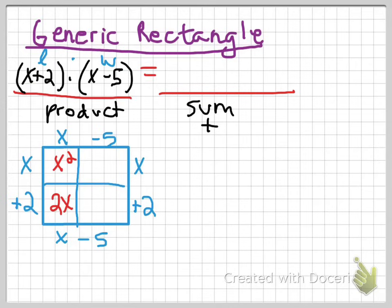In this corner I have negative 5 times x. Well, that's really negative 5x. In this corner I have negative 5 times 2. Well, that is really negative 10. So I get these four pieces. I get an x squared, a minus 5x, a 2x, and a negative 10.